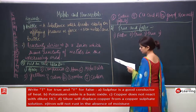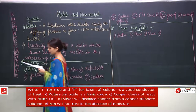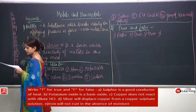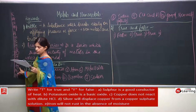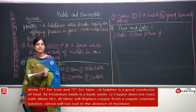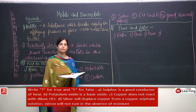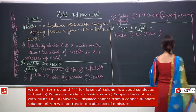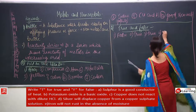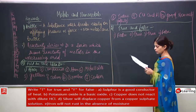Fourth: silver will displace copper from copper sulphate solution. Silver comes below copper in the reactivity series; copper is above silver. So silver cannot displace copper. The answer is false — no.